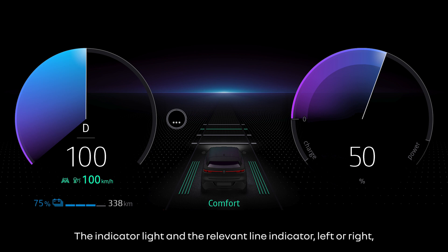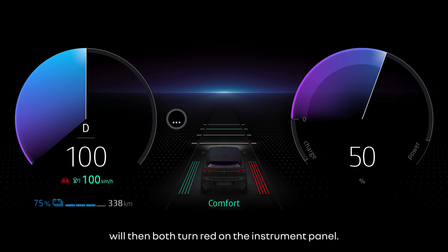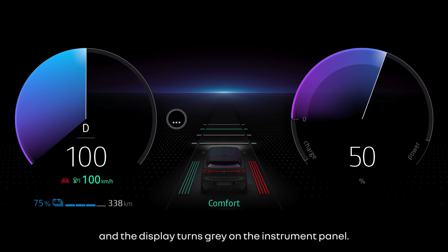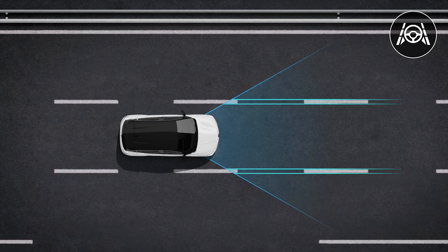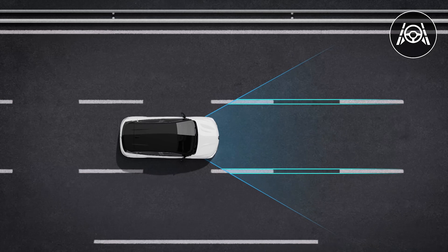The indicator light and the relevant line indicator — left or right — will both turn red on the instrument panel. If the vehicle crosses a line completely and moves out of its lane, Lane Centering Assist is automatically paused and the display turns grey on the instrument panel.